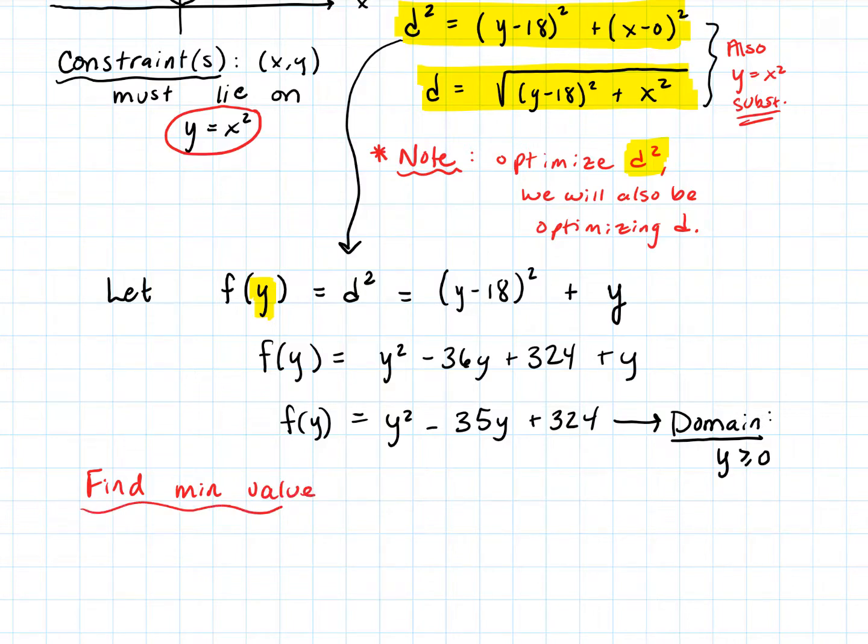So now all we have to do is actually find the minimum value. How are we going to do that? We're going to apply calculus. So just take the derivative, F prime of y is equal to 2y minus 35. Pretty simple derivative there, just that linear function. And then we're going to find the critical points. Obviously that function is always defined, so we're only looking at when it's equal to zero. And while I'm solving this, y equals 35 over 2.